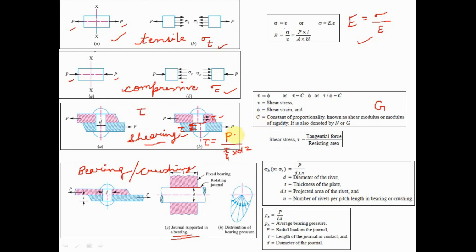Shear stress is defined as the ratio of tangential force to resisting area, written as tau = P / (π/4 · d²). If you visualize the rivet in 3D — it's a cylinder — cutting across any section gives a circle, so the projected resisting area is π/4 · d². We also have the shear modulus, or modulus of rigidity, denoted by capital G, which is the ratio of shear stress to shear strain.